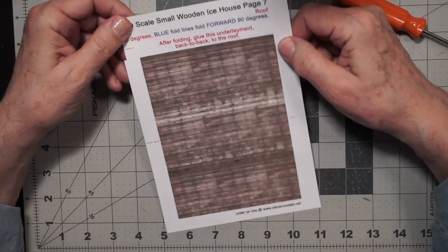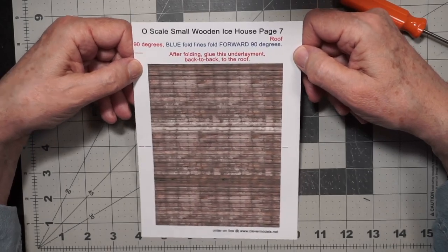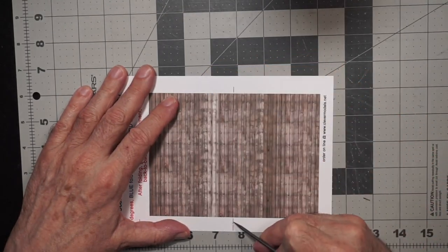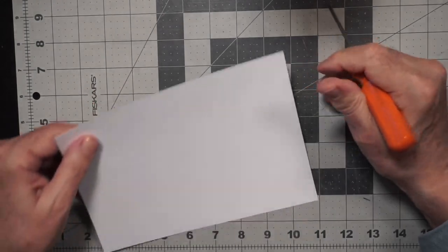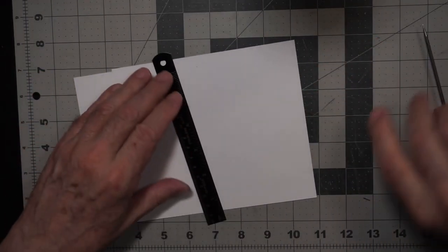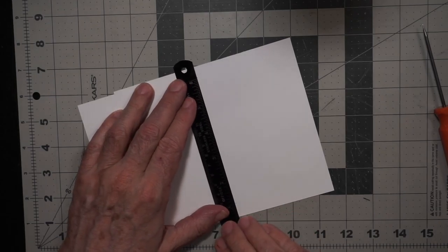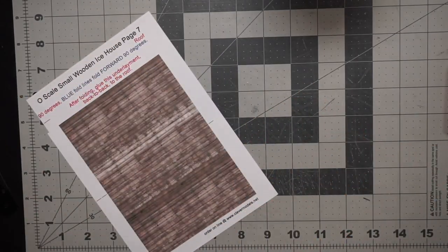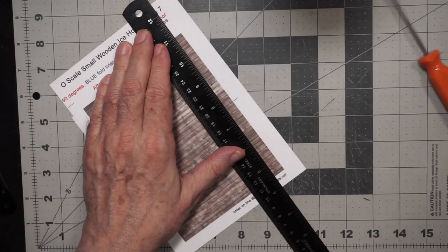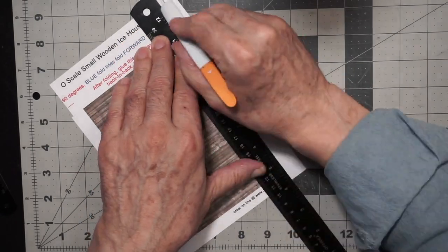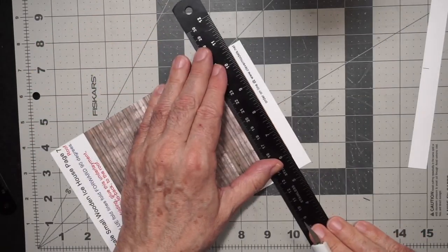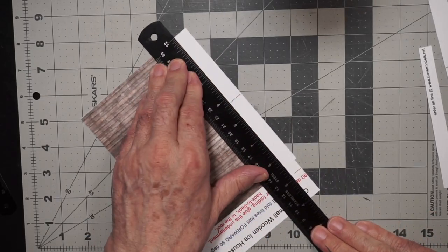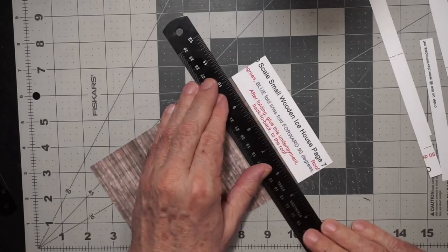The next step is to cut out the underlayment on page seven, but before doing that we're going to mark the fold lines and score that.